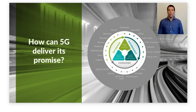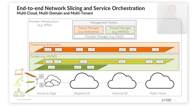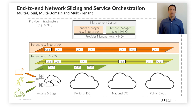5G promises to serve a huge diversity of innovative network services, each with their own characteristics and requirements. But how can 5G deliver such a variety of services while respecting their specific QoS SLAs? The solution comes from network slicing and service orchestration, which allows for lifecycle management and auto-optimization of end-to-end network slices with prescribed QoS SLAs.